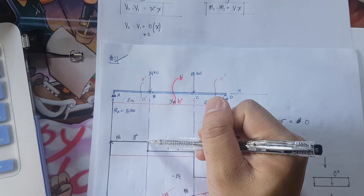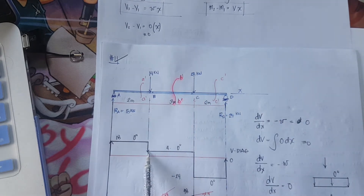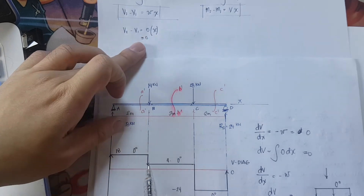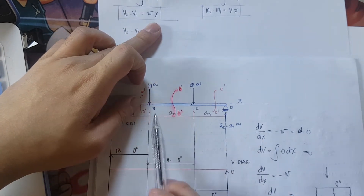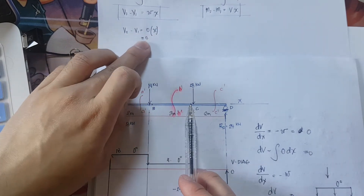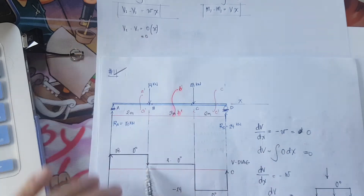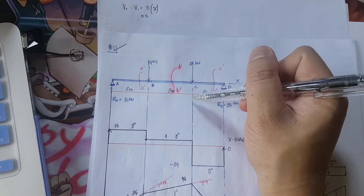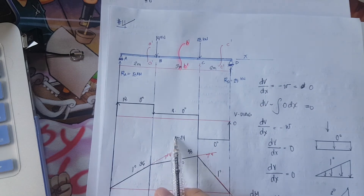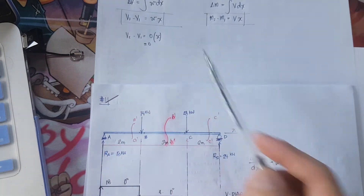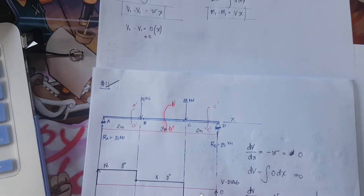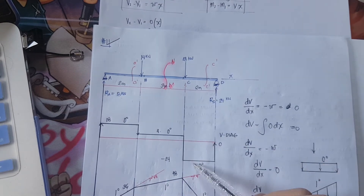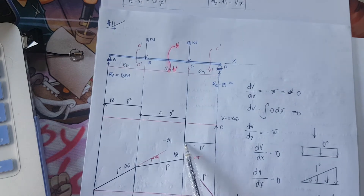From point B there is a downward force of negative 14, so 18 minus 14 equals 4. Using the same principle, shear 2 minus shear 1 equals W times x — is there any load between B and C? There is none, so it's still zero and will be a straight line. From positive 4 we have a downward force of 28, so 4 minus 28 equals negative 24. Is there any load between C and D? There is none, so shear is zero.